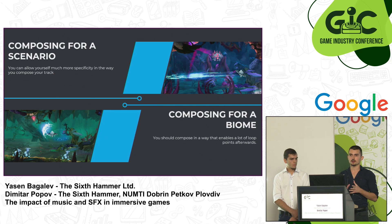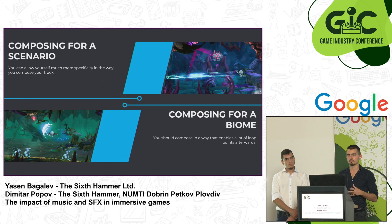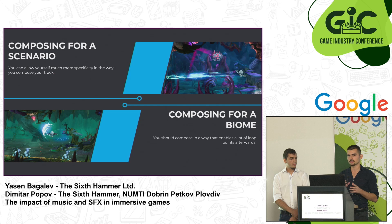When composing a track for a specific scenario, you know exactly how that track will play out, so you can be very specific in how you build it — you have full creative freedom over the tempo, instruments, everything. But when composing for a biome, that track will probably be looping many times, so you need to create a lot of loop points. To do that, you should be much more conservative with changing the tempo or instruments mid-track, and all of your transitions should be much shorter in those tracks.